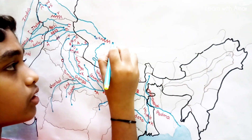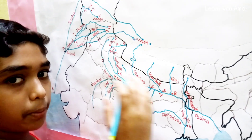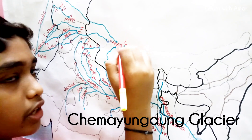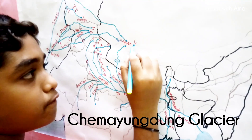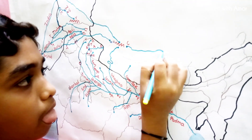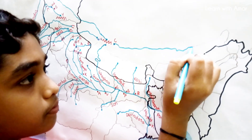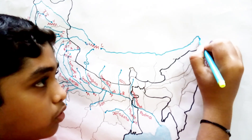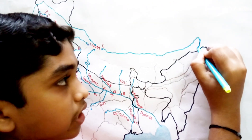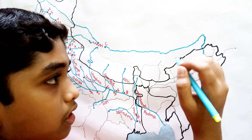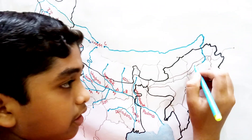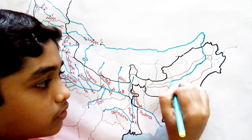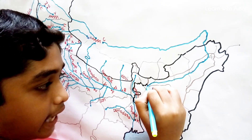The Brahmaputra originates from Chemayungdung Glacier in Tibet, China, and flows through China. It then turns south and enters India in Arunachal Pradesh. It flows through Arunachal Pradesh and Assam, and then enters Bangladesh.